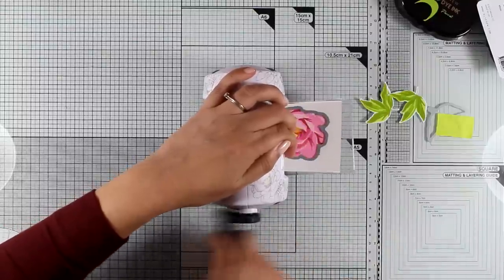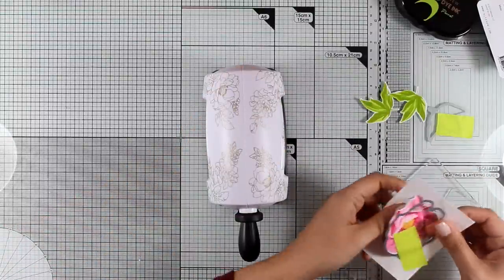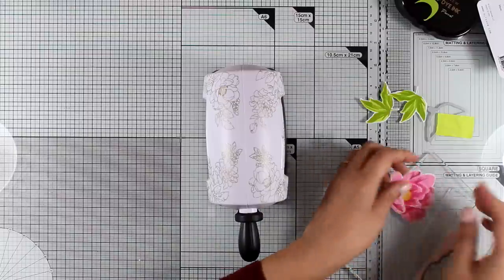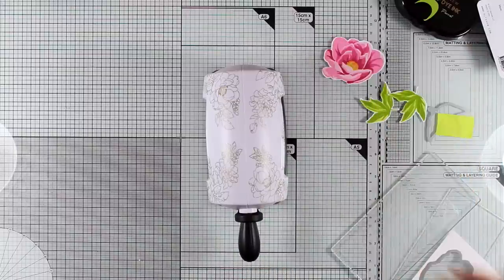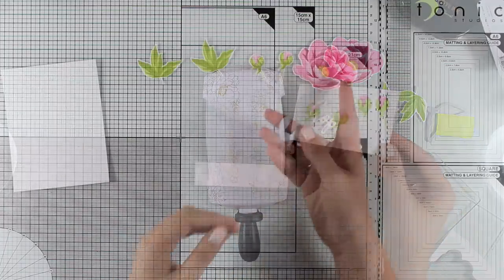And the more I see the flower the more I can't believe how awesome it looks just by using four different ink pads. And that's why I love the oval sets by Altenew so much. They are really foolproof. You just grab a set and you are ready to go.